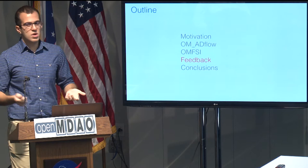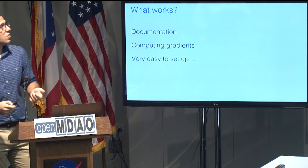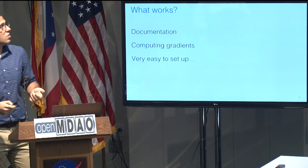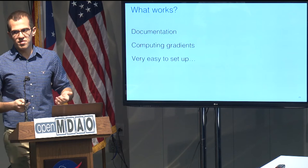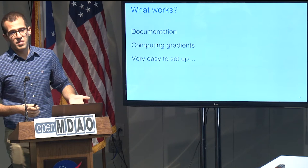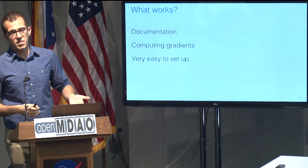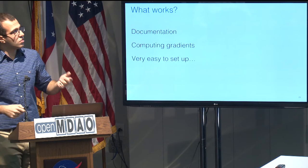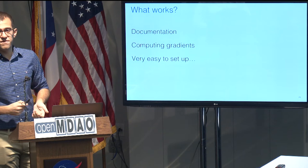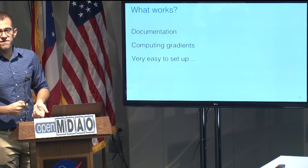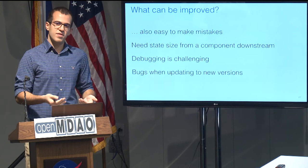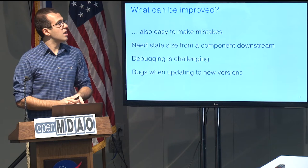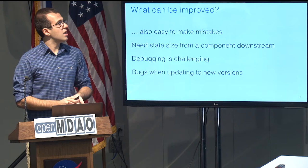Just to give you a quick feedback on my experiences with OpenMDAO — what works? Documentation: I almost always find what I'm looking for, and I find it very useful. Computing gradients: it might sound obvious, but I'm just amazed how well it works. You can change your connections but still have a working Newton solver with very minimal effort — you wouldn't really have that with many other frameworks. The models are very easy to set up. But because of that, it's also very easy to make mistakes. Users don't go through the pain of implementing the coupling themselves, so they don't know how it works, and it becomes more difficult to understand what's going wrong when something breaks.